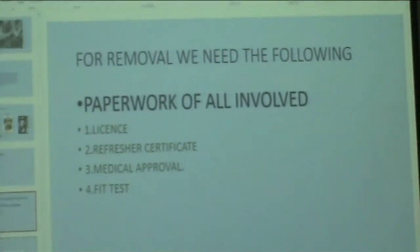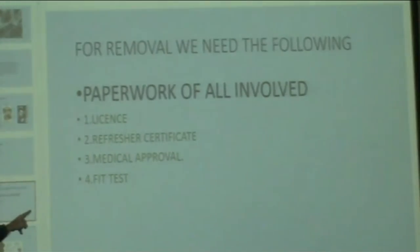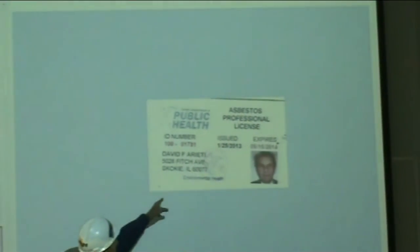In order to remove, encapsulate, or enclose asbestos, you need a license. You can't just walk in off the street. You need a license, a refresher certificate, a medical approval, and a fit test. Every year you have to get a new license, and in order to get it you have to take a refresher class. This is my license — the latest one, expiring in May 2014. On the back is the training certificate.